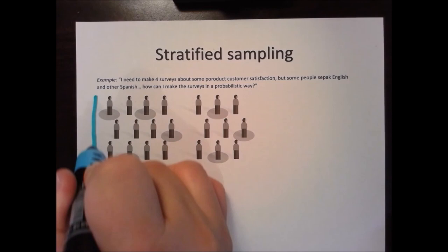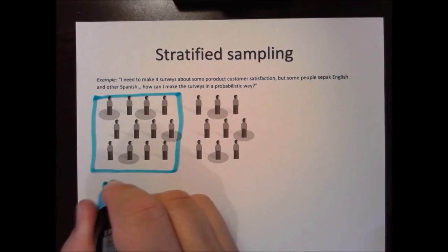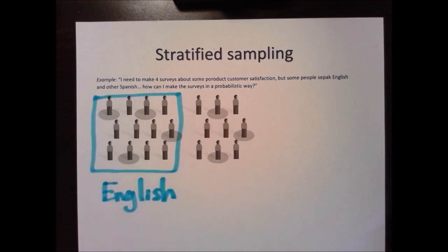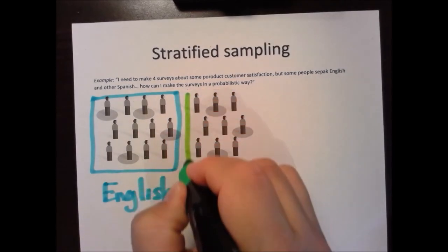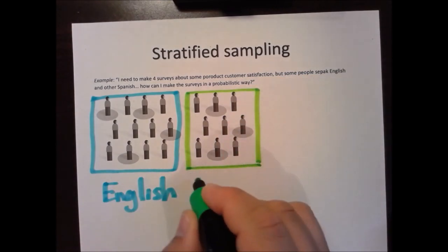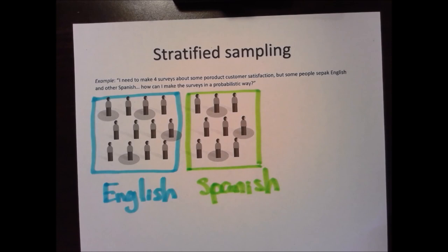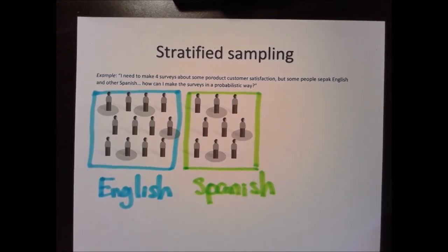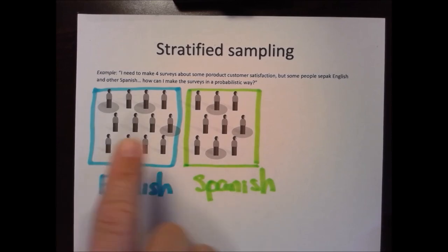For example, all the people in this group speak English, and all the people in that group speak Spanish. Sometimes the groups are not given to you directly, but you know they have a specific characteristic that forms subgroups within the population. In this case, we have English speakers and Spanish speakers.